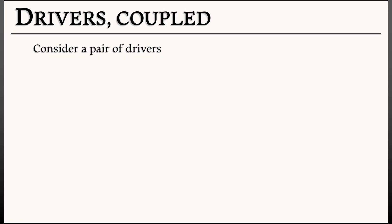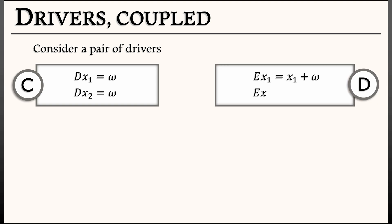Let's think about how that would work. Let's consider a pair of drivers that exert this slight influence on each other. So in continuous time, what do we have? We have x1 and x2, where dx1 is omega, dx2 is omega. Similarly, in discrete time, ex1 is x1 plus omega, ex2 is x2 plus omega. Now this is an uncoupled system. We want to couple them together. How do we do that?